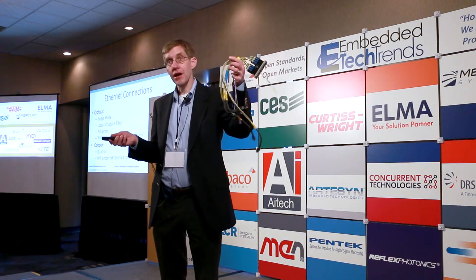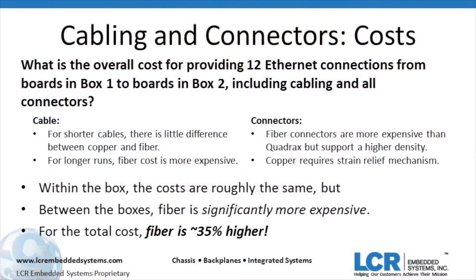So let's look at cost — the overall cost for our simplified model going from the blades to a connector, across to another box and back in. For the cable, when runs are short, the cable cost is not much. When you go to longer and longer runs, that's where the fiber optics cost starts coming in. A ballpark for a good ruggedized fiber optics cable is about 60 cents per centimeter, so at 20 feet you're getting to some cost.